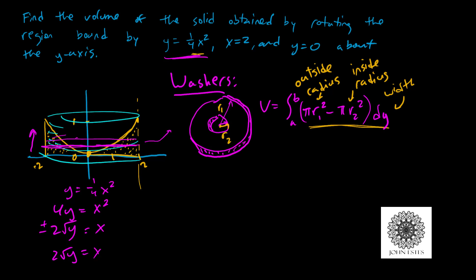My volume integral goes from 0 to 1 in the y direction. Looking at my picture: the outside radius is the vertical line x equals 2, so that's 2 squared. The inside radius is the curve, which in terms of y is 2 root y, so that's (2 root y) squared. My integral is the integral from 0 to 1 of pi times 2 squared minus pi times (2 root y) squared, dy.